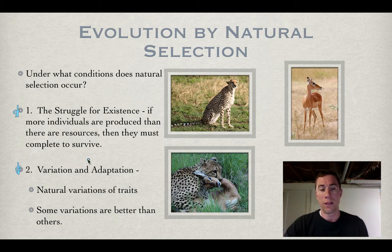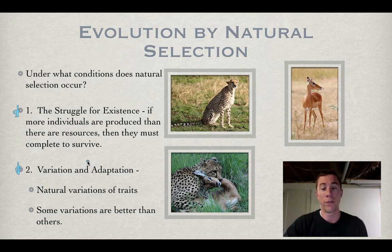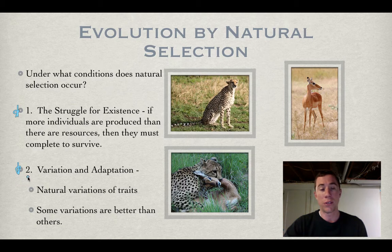If there's a whole bunch of individuals and there's not a lot of food, then those individuals are going to compete with one another to acquire the food, the space, and any other resources. Darwin also said that natural selection occurs when there's variation and adaptation.